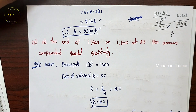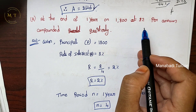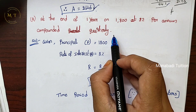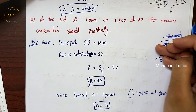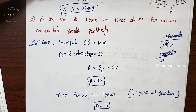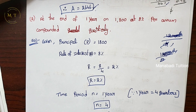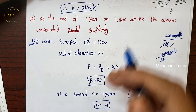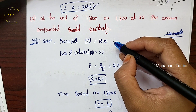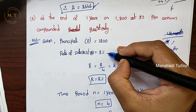Second problem: at the end of one year, on 1800, at 8% per annum, compounded quarterly. For quarterly, in one year we have 12 months divided into 4 parts. That means one quarter is 3 months. Second quarter is another 3 months, making a half year equal to two quarters. So here, principal is 1800 and rate of interest is 8%.